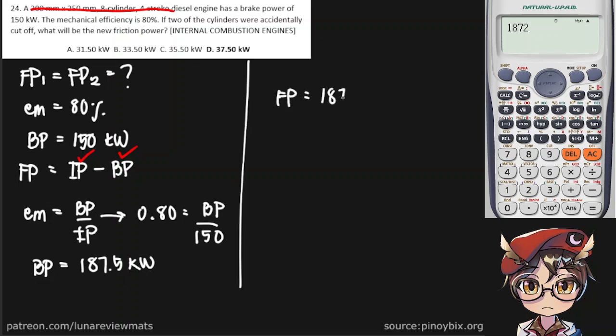That's 187.5 minus 150. That gives us 37.5kW for our friction power.